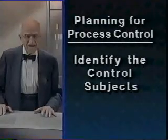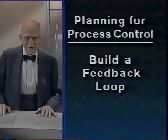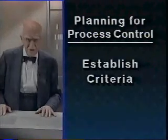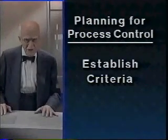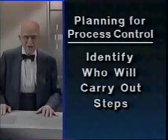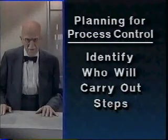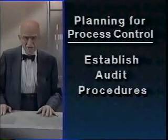Planning for process control is a series of specific activities. First, identify the control subjects. Then, build a feedback loop around each control subject. Next, establish the process control criteria, such as rules for data collection and analysis, and rules for decision making. Also, establish corrective action steps and identify who is to carry out each step of the feedback loop. Finally, establish audit procedures to assure that the control plan is followed.